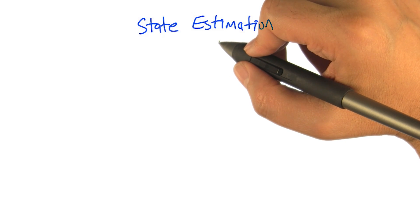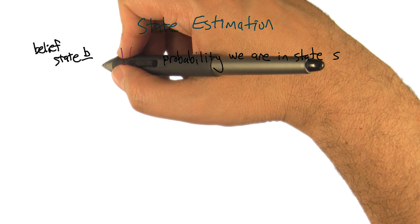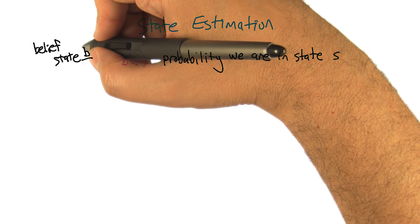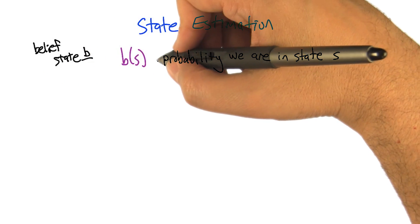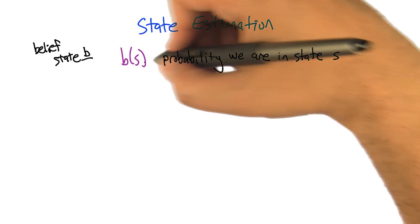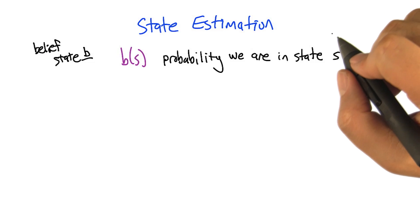What we're going to do is consider what we call belief states. So the state that the decision maker is going to use in the context of a POMDP is going to be a belief state b. And what a belief state b gives you is that if you tell me a state like s, belief state b of s tells us the probability that we're actually in state s at the current moment of time.